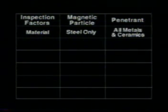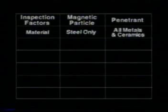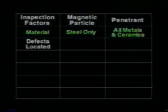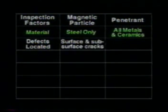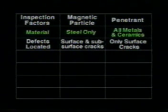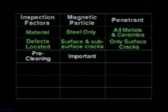You have to use penetrant testing on non-magnetic materials like aluminum, copper, titanium, and ceramic. The type of defect you need to locate is also important. Magnetic particle testing locates surface and slightly subsurface flaws, while penetrant inspection locates only surface cracks. With both methods, it's important to remove oils, grease, and dirt before testing.